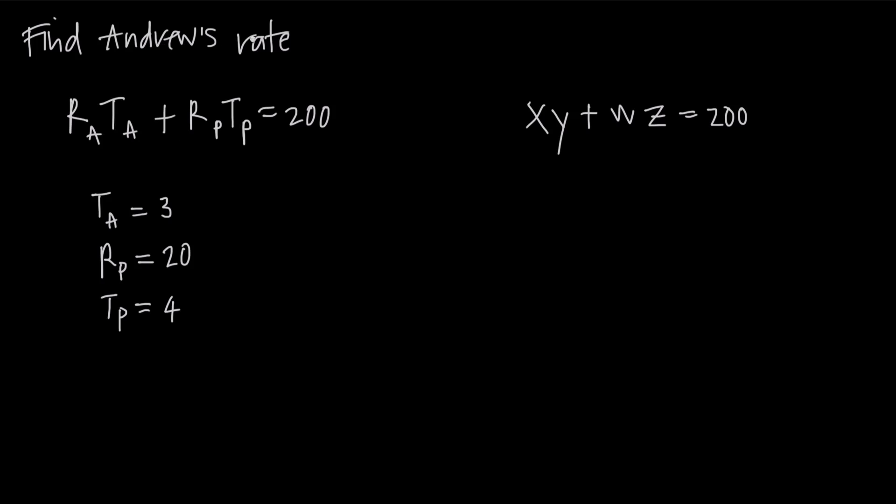So we've been asked to find Andrew's rate. We know right away that we're trying to find r sub a because r sub a is the rate of Andrew. So that's the variable we're solving for. We've been given some other values. We know that Andrew's time is 3 hours, Peter's rate is 20 miles per hour, and Peter's time is 4 hours. If we just plug these values in for the variables with the subscripts, then we can solve for Andrew's rate.